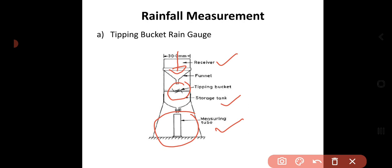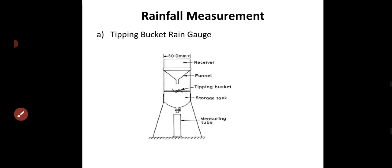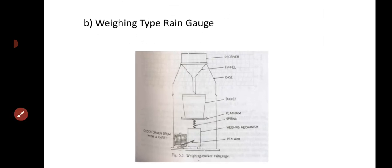The tipping bucket rain gauge is a good instrument to collect rainfall data from remote areas. One drawback is that it cannot measure snowfall. However, it is very useful because it can be used in remote areas and can also record the hours and time at which a particular amount of rainfall occurs. It is easy and convenient.